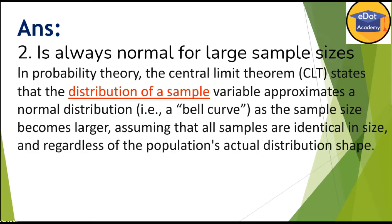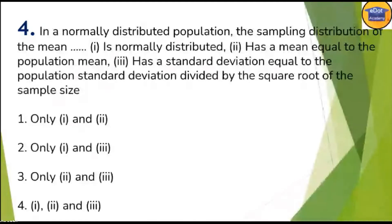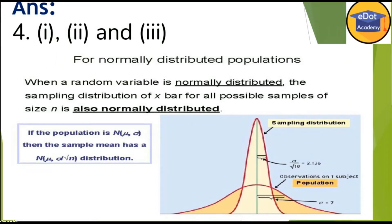Now, question four from the same sampling topic: in a normally distributed population, the sampling distribution of the mean — is it normally distributed? Has a mean equal to the population mean? Has a standard deviation equal to the population standard deviation divided by the square root of the sample size? Looking at the figure again, the mean of the sample distribution matches with the mean of the population — this line is matching.